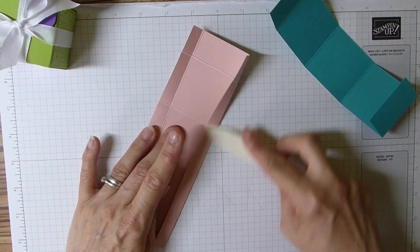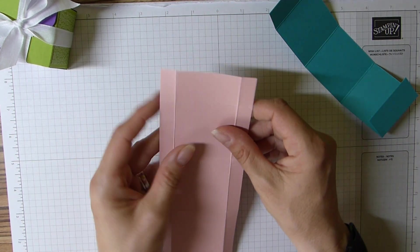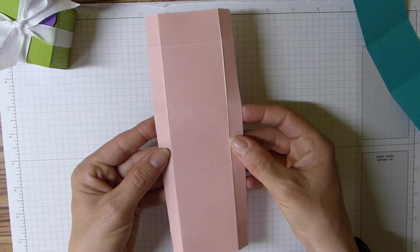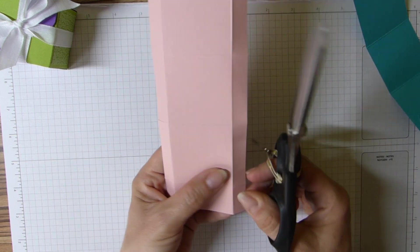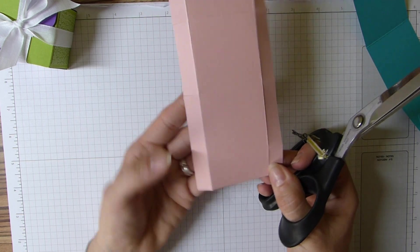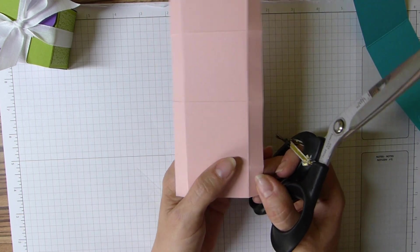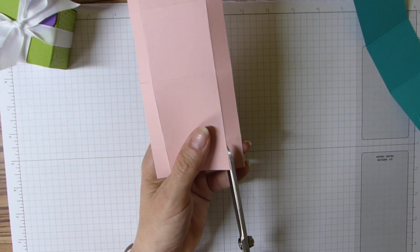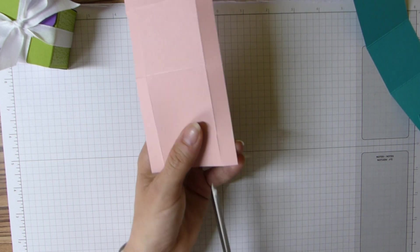Okay, then with your piece that has the long strips either side, we're going to start off at the bottom. Doesn't matter which side, left or right, we're going to repeat it on both. We're going to cut away this first rectangle here.